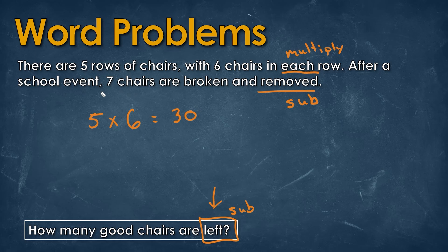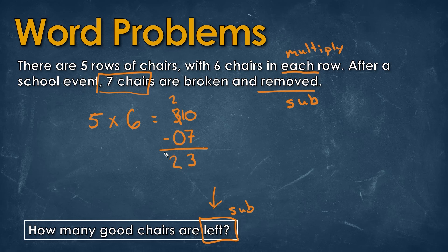Then the seven chairs are removed, so we subtract: 30 minus seven. We borrow from the three, turning it to two and giving us 10 in the ones place. Ten minus seven equals three, and two minus zero equals two. So we have 23 good chairs left.